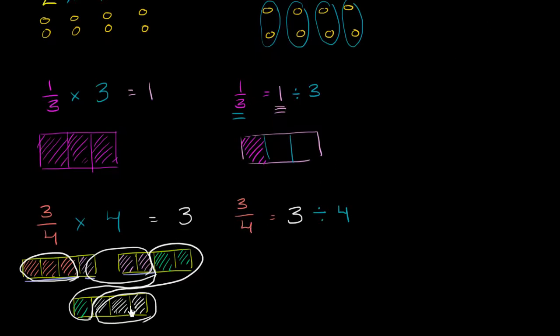And looking at this diagram right here, it made complete sense. If you started with three wholes and you want to divide it into four equal groups, one group, two groups, three groups, four groups, each group is going to have 3 fourths in it.